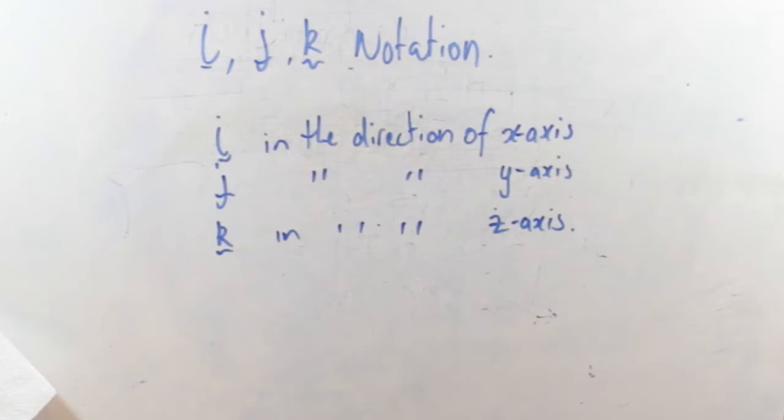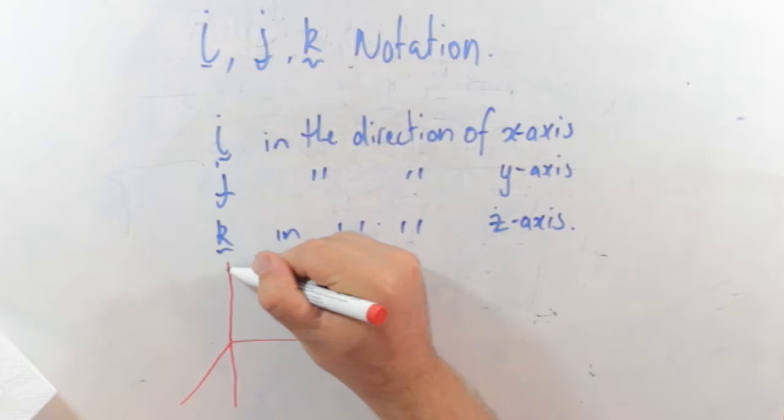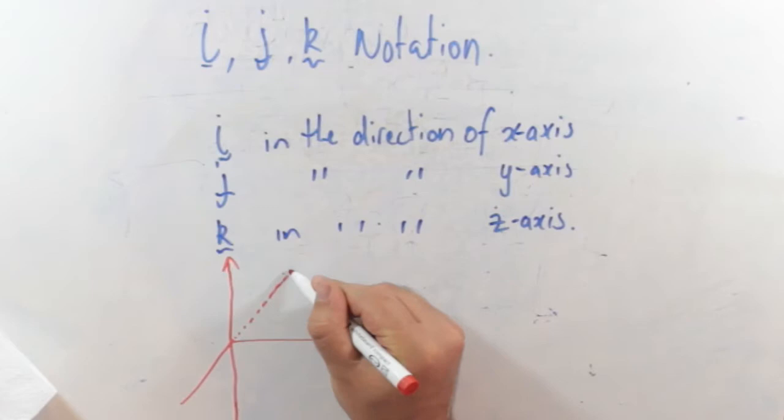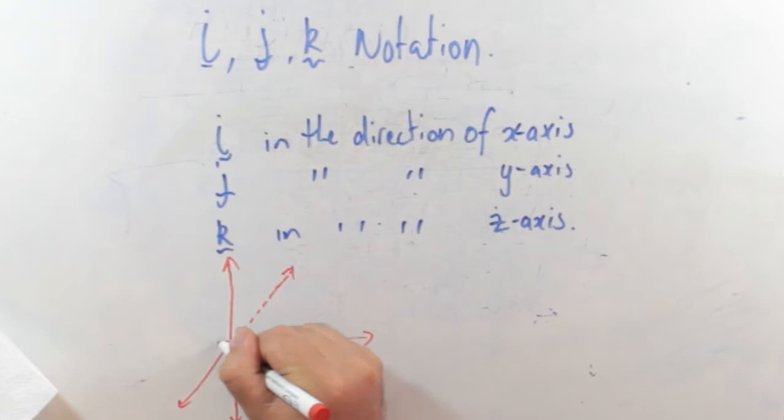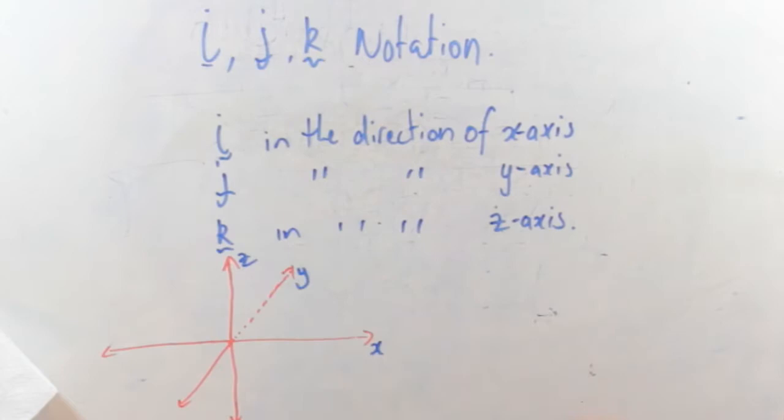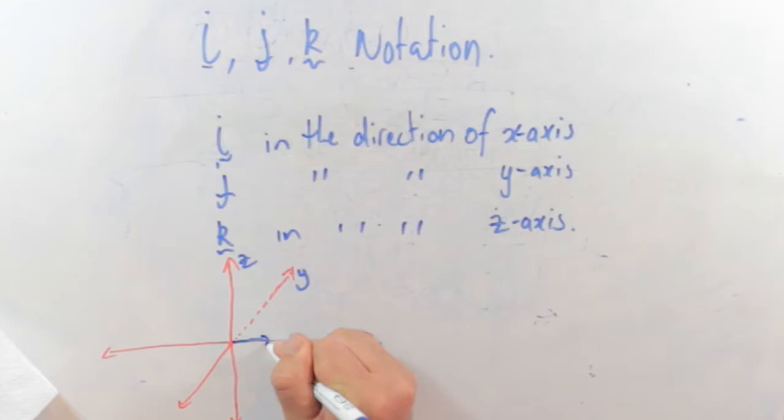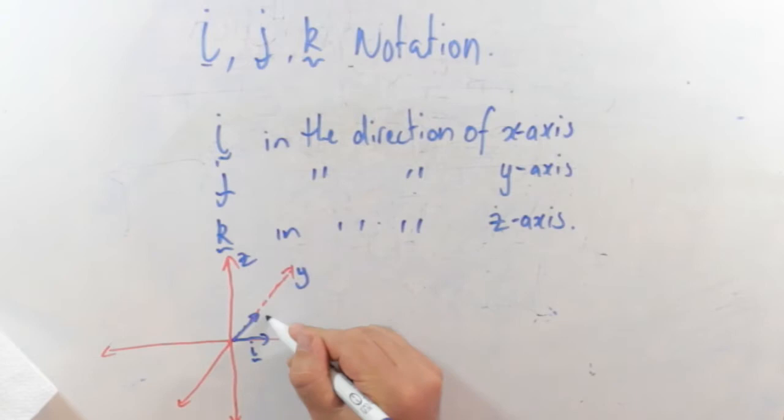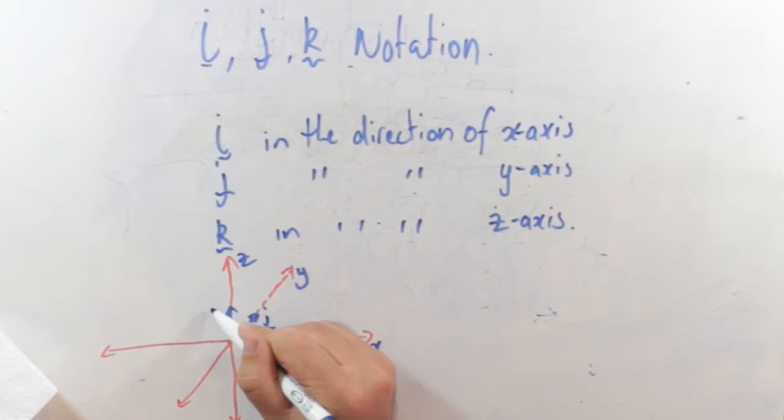So if I draw that out, this is my attempt at drawing in 3D. We've got our x-axis, our y-axis, and z straight up. So here makes a plane, and then we've got straight up and out of the page, we've got the z-axis. So the i is a unit vector this way, unit vector that way is j, and up and down we've got a unit vector k. So these are all magnitude 1 in that direction.